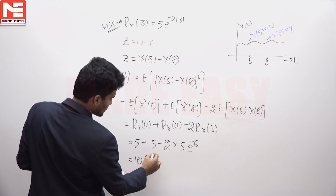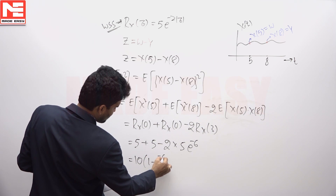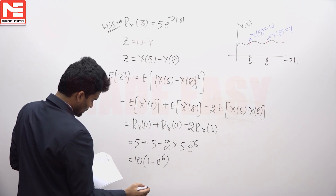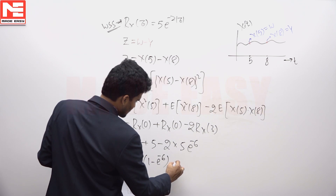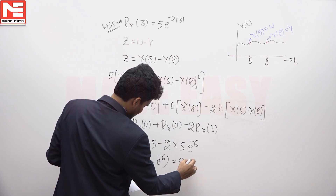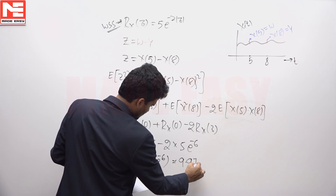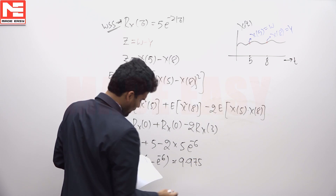Taking 10 as common, the result becomes 10·(1 - e^(-6)), which is approximated to 9.975.